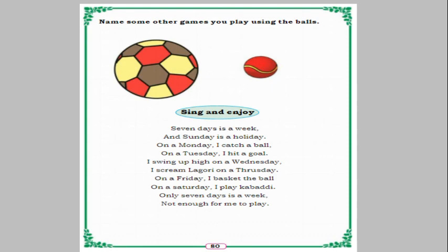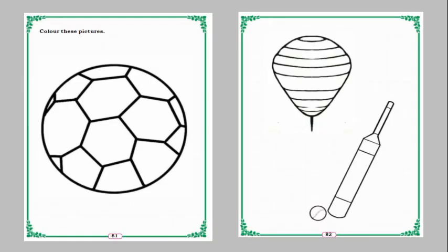There is a song here about games. 'Seven days in a week, and Sunday is a holiday. On Monday I catch a ball, on Tuesday I hit a goal, I swing up high on Wednesday, I scream Luguri on Thursday, on Friday I basket the ball, on Saturday I play Kabaddi. Only seven days in a week — not enough for me to play!' You can also sing and enjoy this song, children.